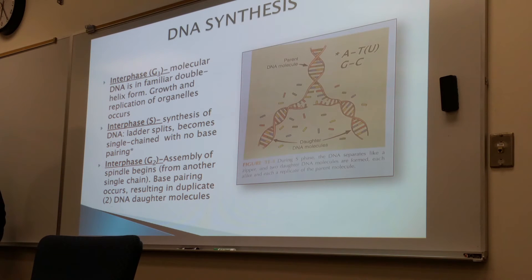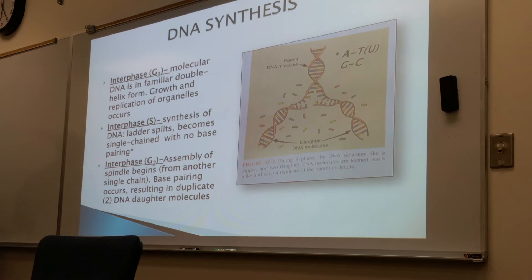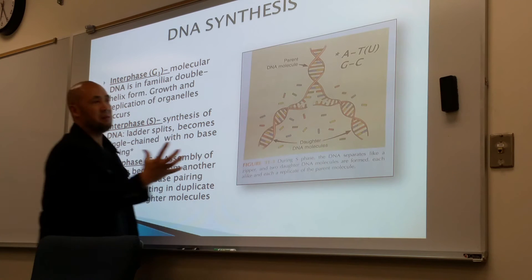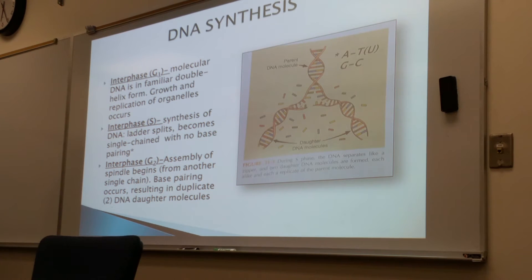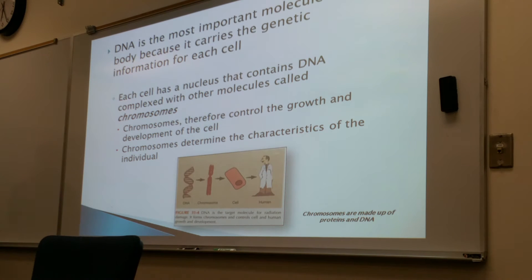In G1 of interphase, the DNA is in its familiar double helix form and growth and replication of organelles start to occur. In the S phase, synthesis of the DNA occurs, with the ladder splitting up and becoming a single chain with no base pairing. In G2 (interphase), they start to reassemble — spindles come together, form again into a single chain, base pairing occurs, resulting in two daughter cells having the same DNA. This continues through metaphase, anaphase, and telophase.